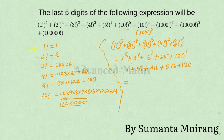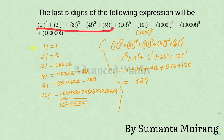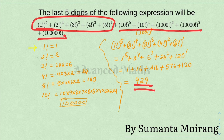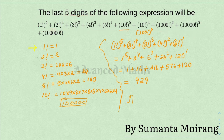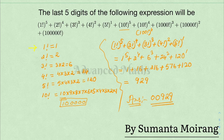Adding these up: 576 plus 216 plus 16 plus 1 equals 809, plus 120 gives 929. So the last five digits — we need five digits — the answer has three digits: 929, so the last five digits are 00929.